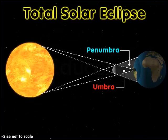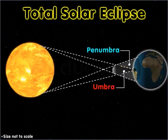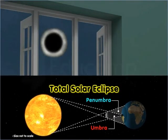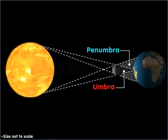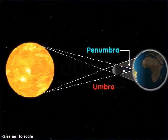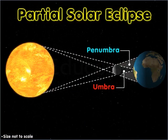A total solar eclipse occurs in the region where the umbral shadow of the Moon falls on the Earth. Those in this region on the Earth cannot see the Sun, and to them the sky appears dark. When the Moon's penumbral shadow strikes the Earth, we see a partial solar eclipse in that region.